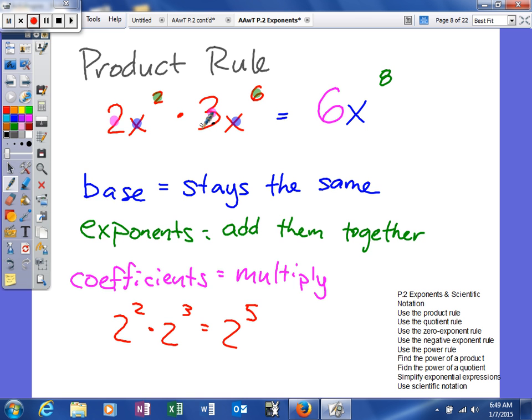So again, just a quick review. The base will stay the same. The exponents we will add together when we're using the product rule. And then the coefficients, we're going to multiply. A quick hint: we always do one operation below with our exponents, and we always just do the exact same operation with our coefficients. Another example here,